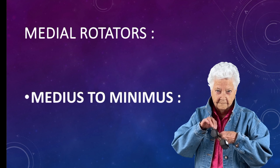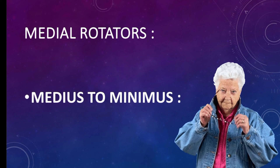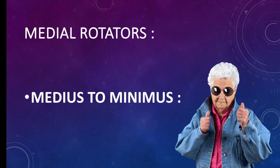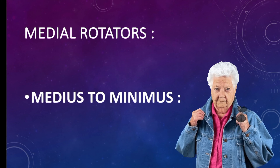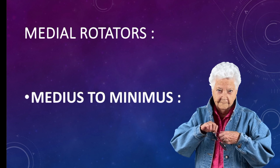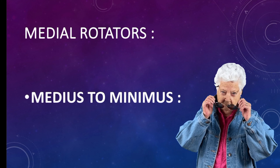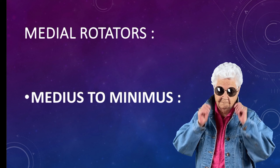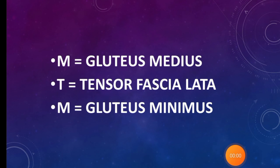Coming towards medial rotators. The mnemonic to remember medial rotators of the hip is 'medius to minimus.' M for gluteus medius, T for tensor fasciae latae, M for gluteus minimus.